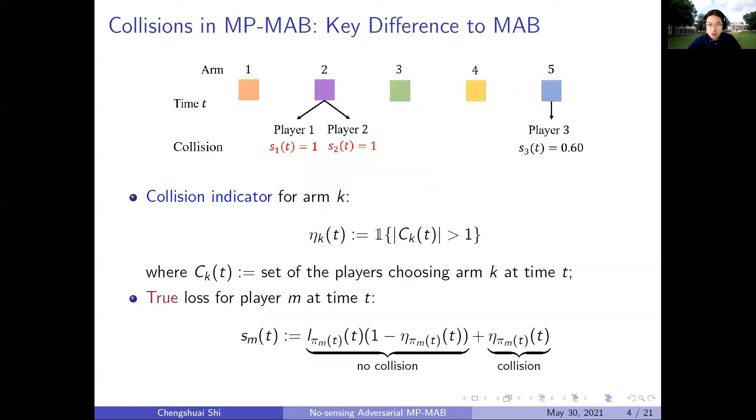As I just mentioned, the regret definition counts the true loss suffered by the players, which is the result of a key concept of collision. This is also the key difference between multiplayer bandits and standard bandits. Especially when there are more than one player selecting the same arm simultaneously, a collision happens on this arm. The collision indicator on the slide formally defines this event, which is ηk(t). Further, if a collision happens, all players that select this arm suffer a loss of 1, which is the maximum loss.